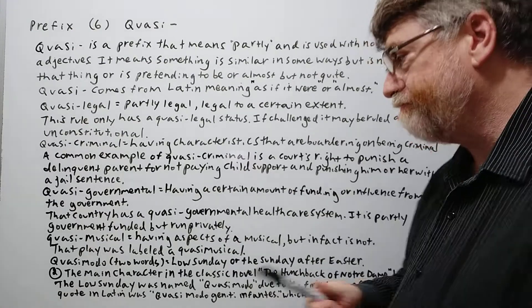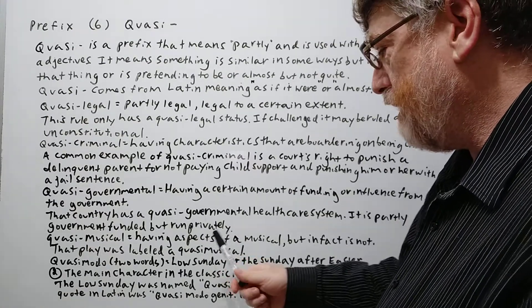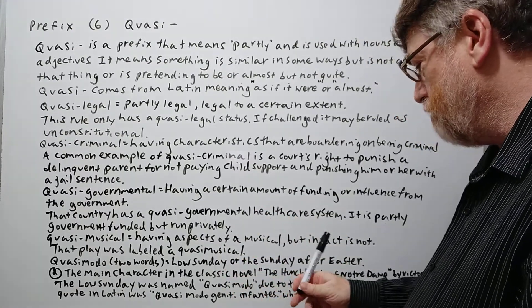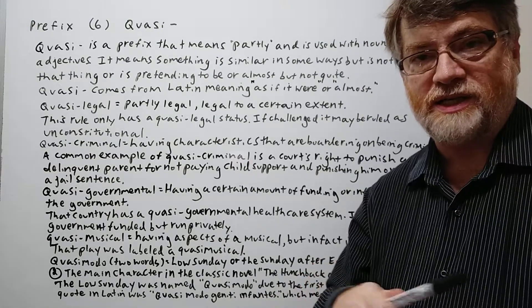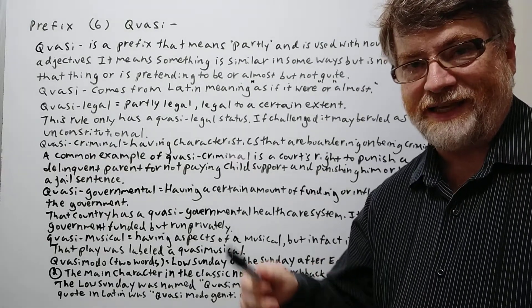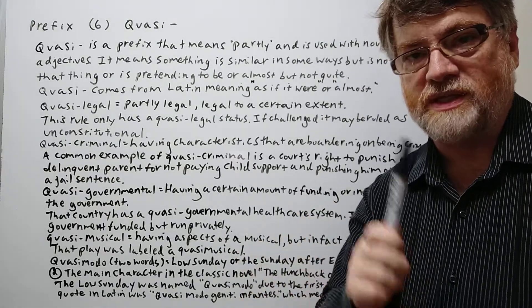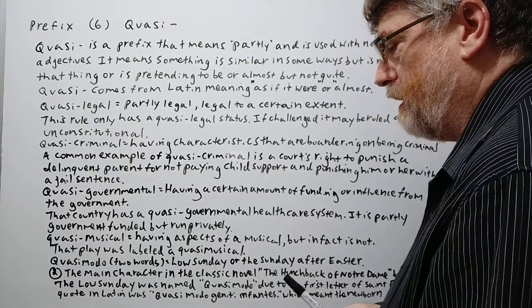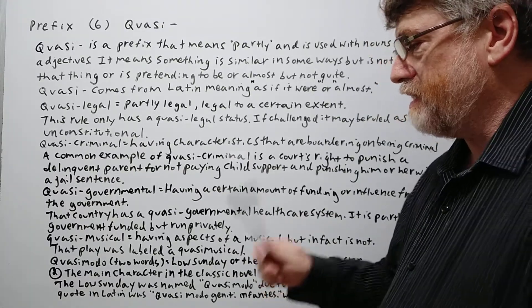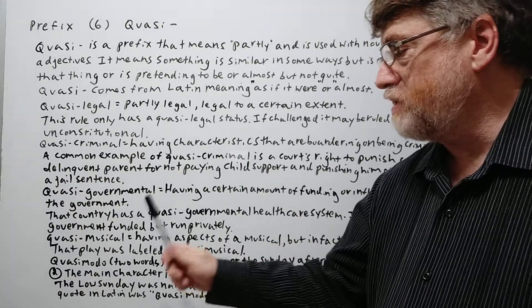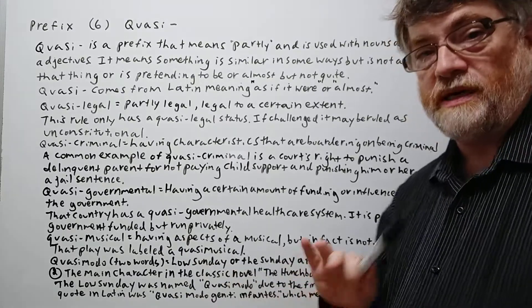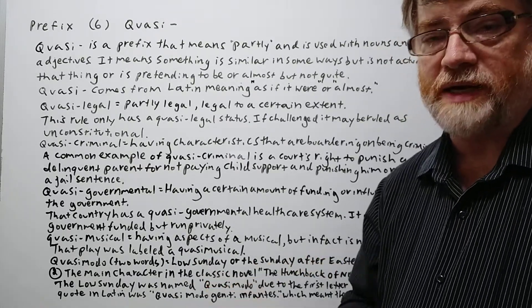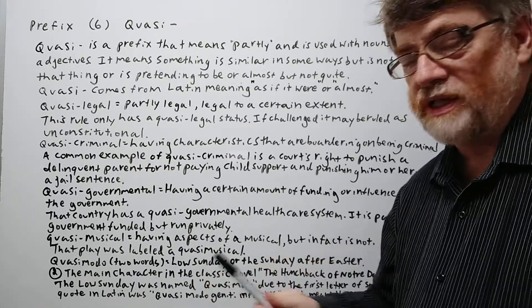We also have quasi musical — having aspects or parts of a musical, but in fact it is not, and doesn't really fall into the category of a musical. For example: 'That play was labeled a quasi musical.' Maybe they had some songs in it, but it wasn't really a musical.